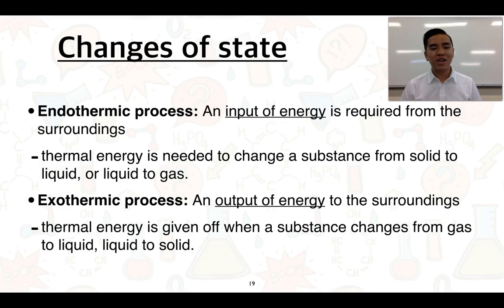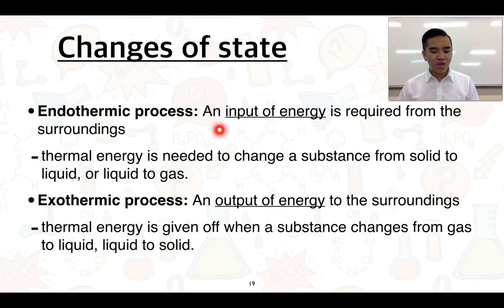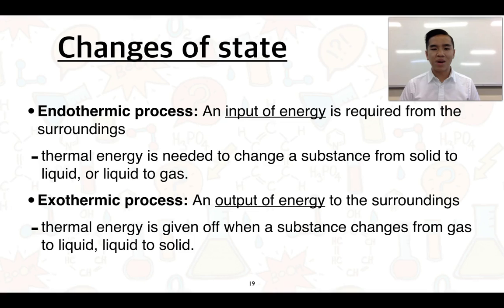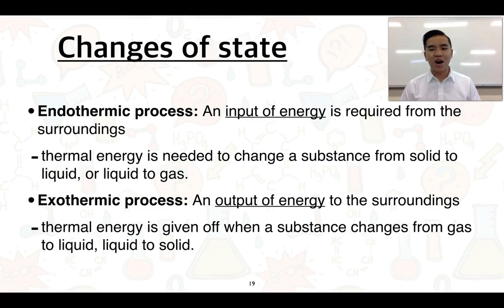When we talk about changes of state, we can talk about them in terms of endothermic and exothermic processes. In an endothermic process, we require an overall input of energy to change the states of matter from one to the other — an input of energy from the surroundings. We would need this when we need to convert a solid to a liquid and a liquid into a gas, for example, converting ice into liquid water and then liquid water into steam.